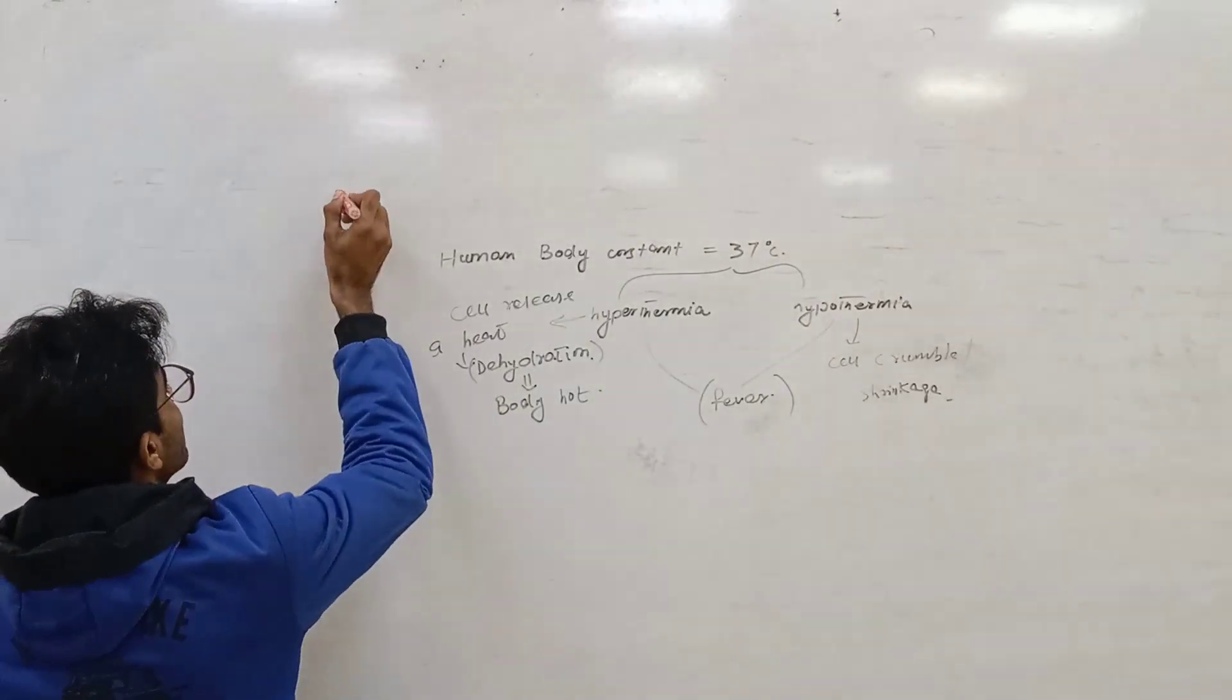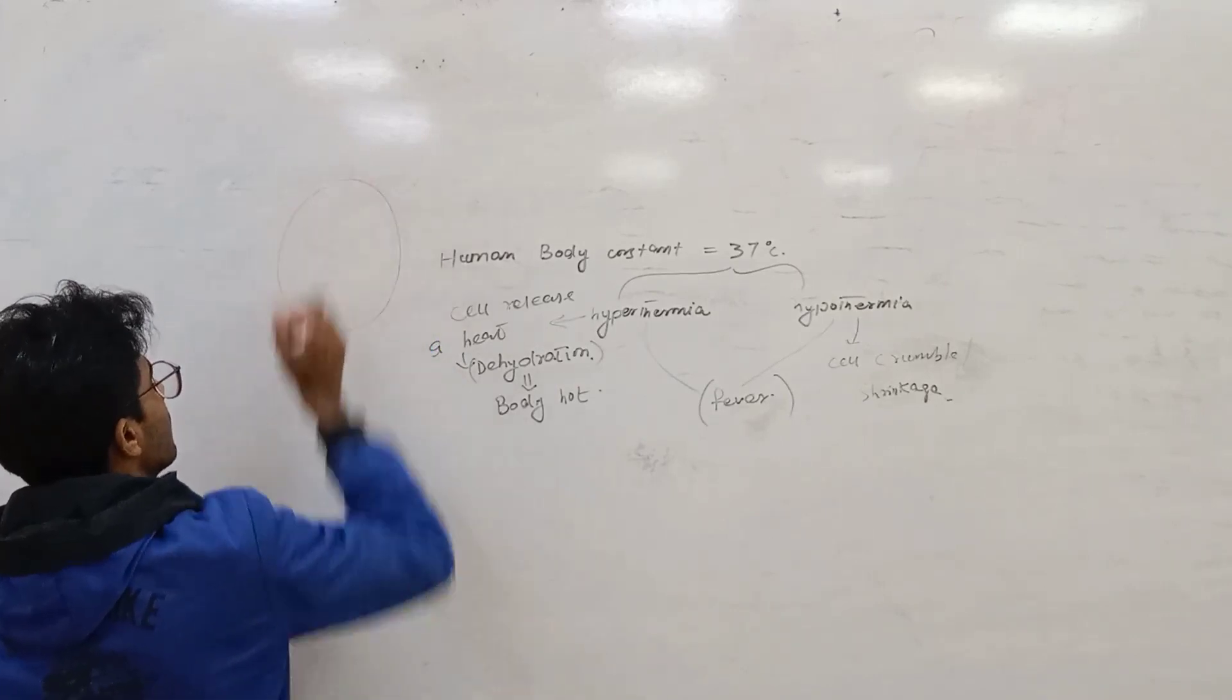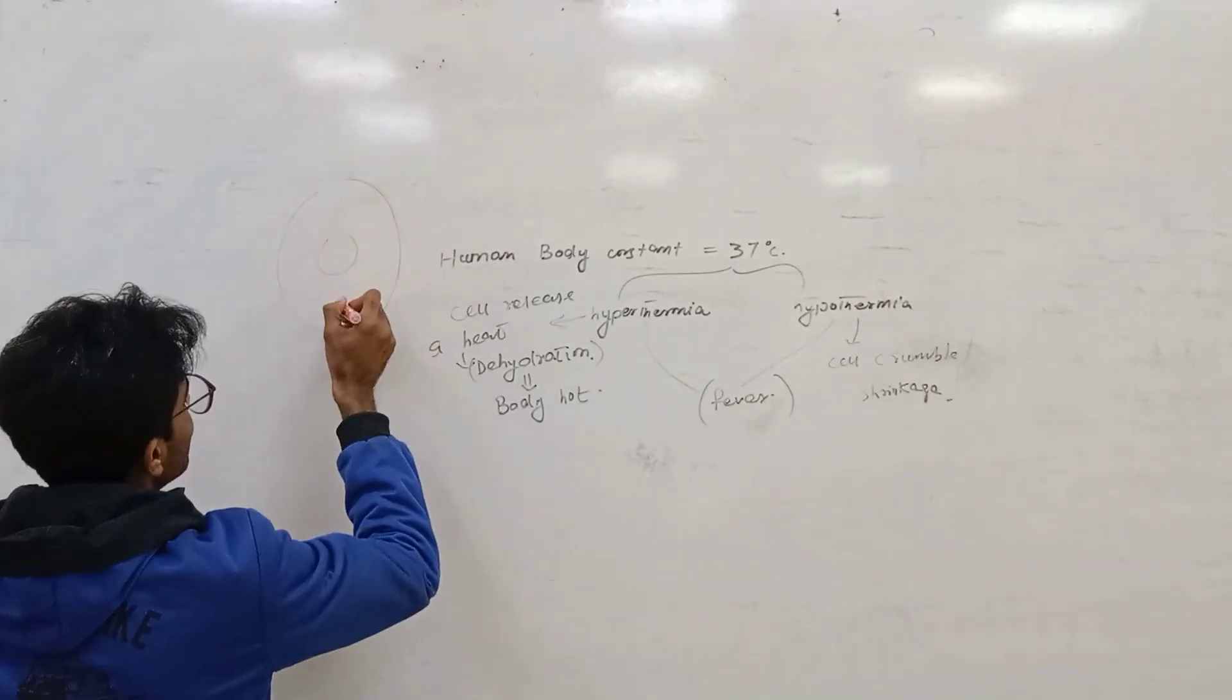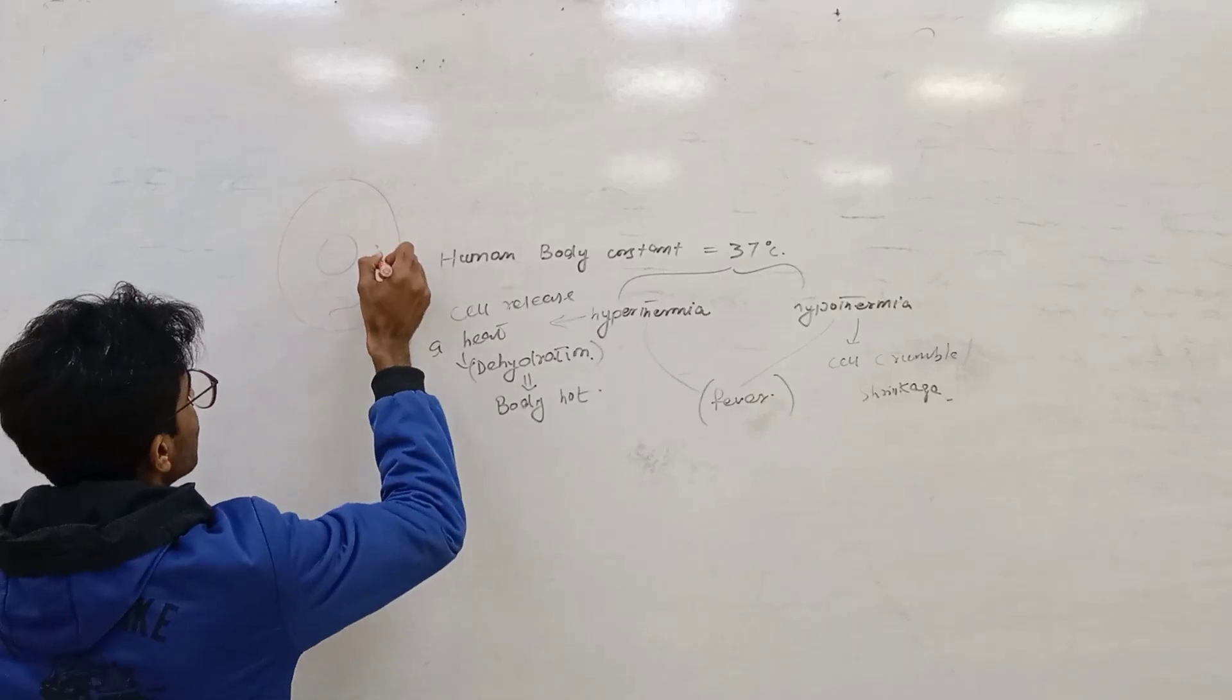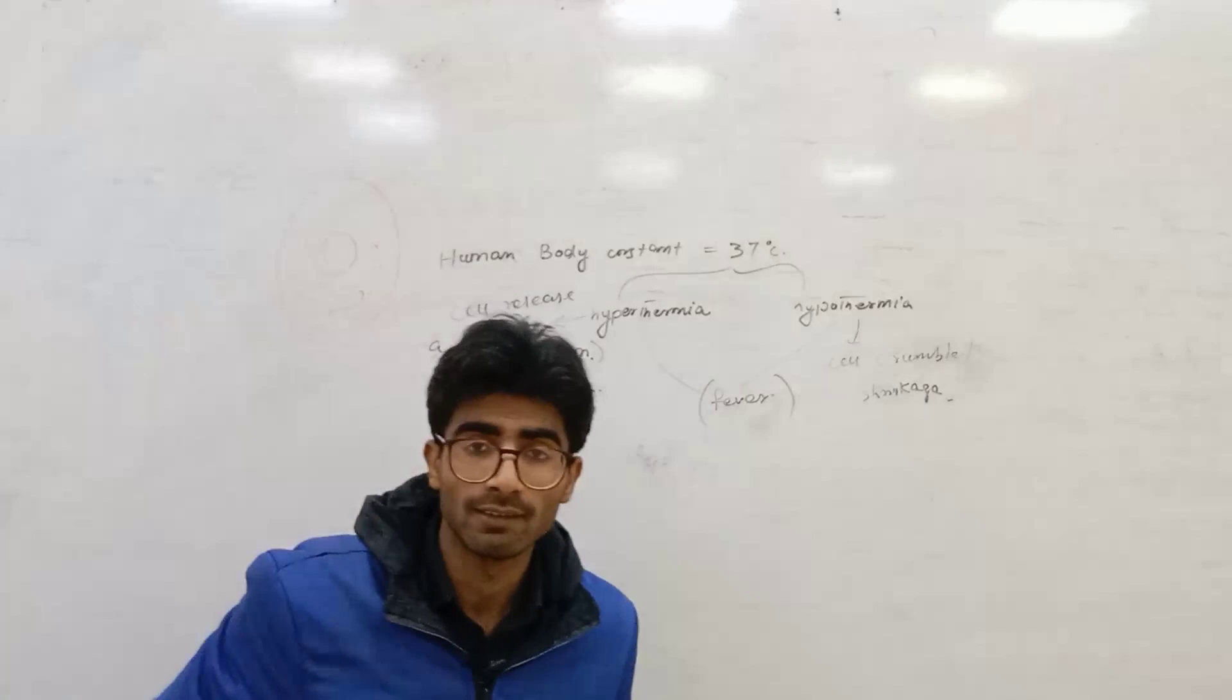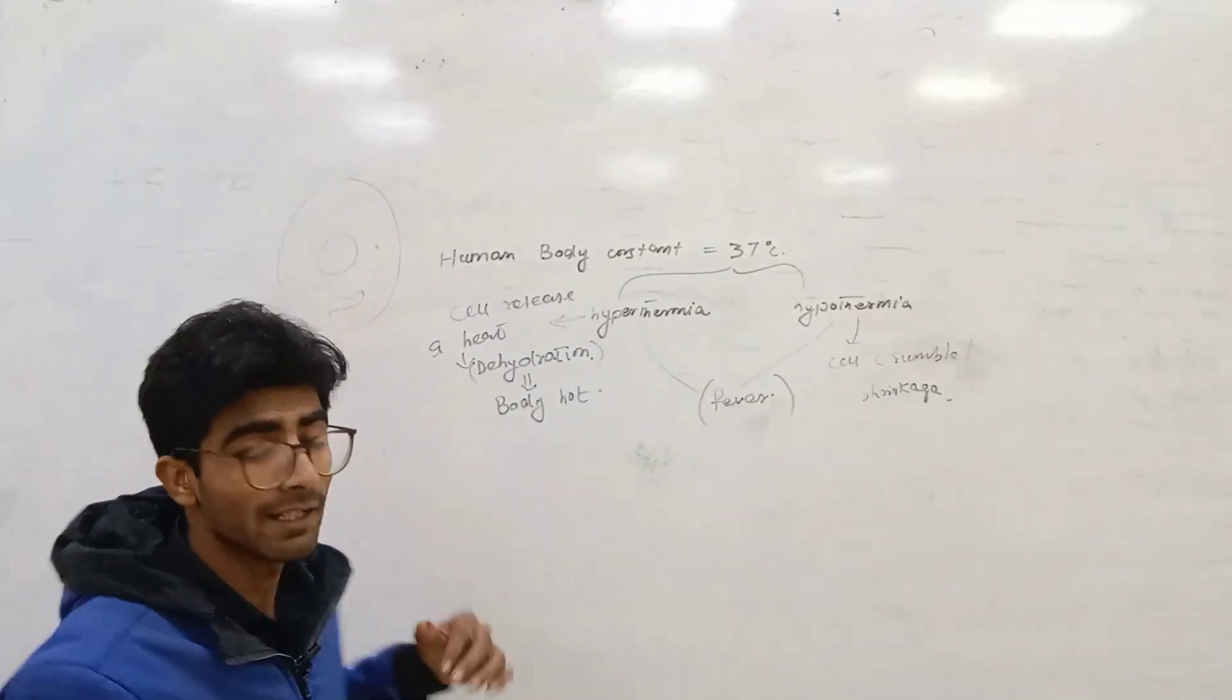Suppose we have a cell. This cell have nucleus, organelles, mitochondria, ribosomes, lysosomes, Golgi apparatus, and also enzymes.